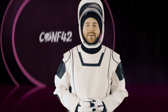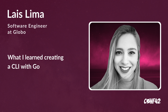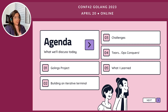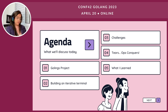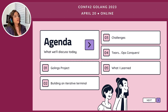We opened the event with a session by Lais Lima, software engineer at Globo: 'What I learned creating a CLI with Go.' I'll talk about what I learned coding a CLI in Golang. Today we're going to talk about the Golings project — what it does, how I built the interactive terminal, challenges I faced, what I learned, and yes, there are tears. But we don't have a conqueror of a compiler program without tears, am I right?